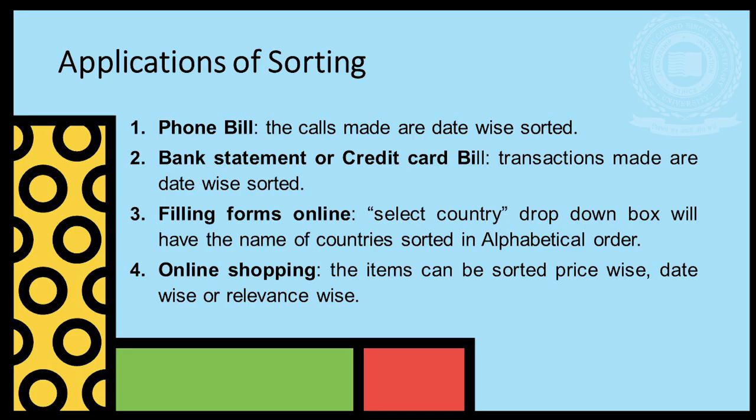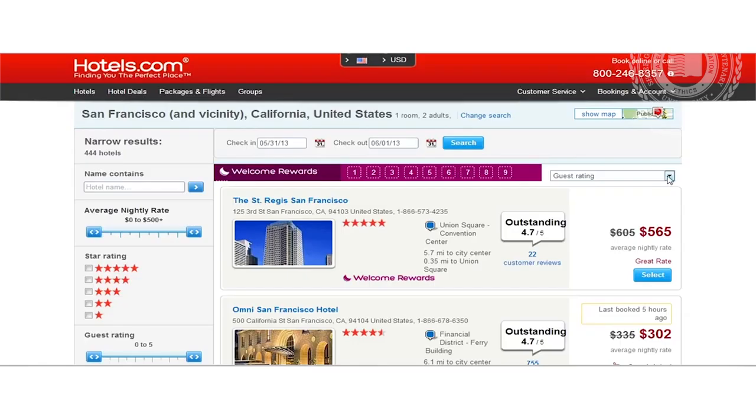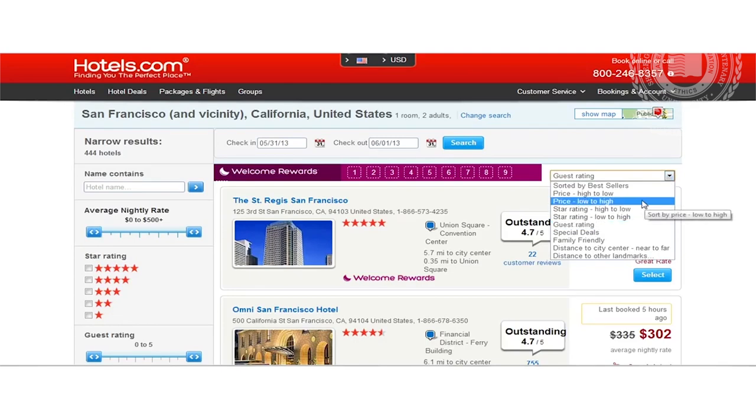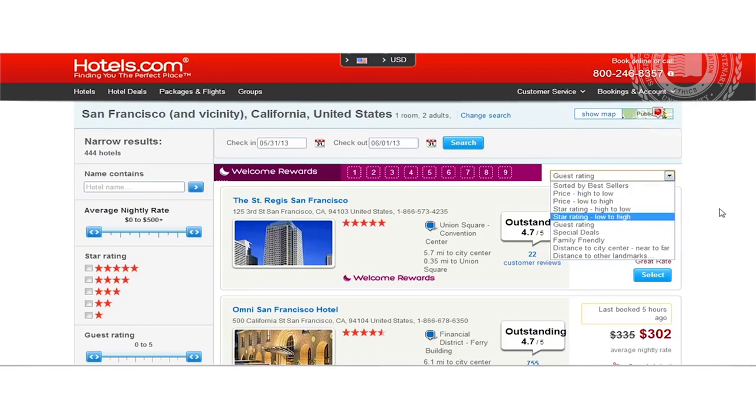Fourth, online shopping. In this video, we sort the product, in this case hotels, according to various preferences like price, ratings, deals, distances, etc.